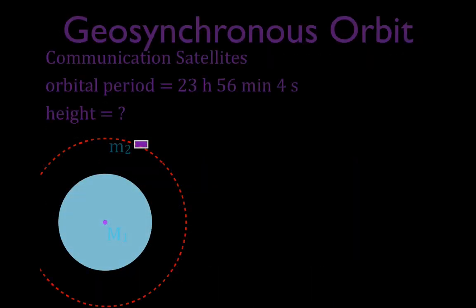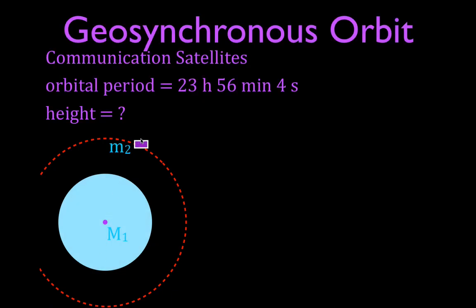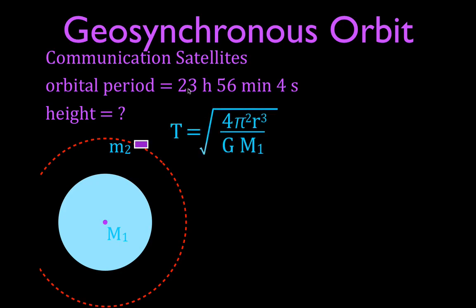We're going to calculate the height. We have the Earth and a satellite — this often occurs with communication satellites, which want to communicate with the same area on Earth, so they stay right above the same place — essentially a geostationary orbit. The orbital period is 23 hours, 56 minutes, and 4 seconds, and we want to know what height is needed to achieve this orbital period.